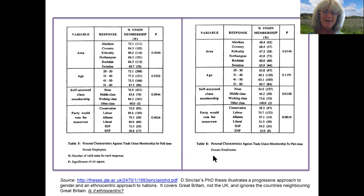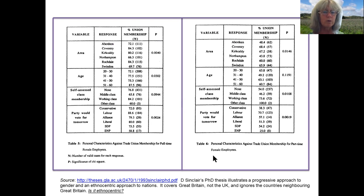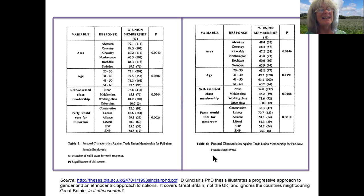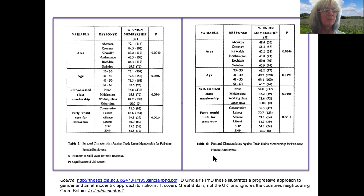So is it ethnocentric? Ethnocentric means centered upon a single ethnicity or single group. Here the group is Great Britain, and the PhD covered Great Britain, not the whole of the UK — that has to do with the inclusion or exclusion of Northern Ireland. This question of whether something is ethnocentric keeps rising its head and will keep coming up. We're going to return to that question shortly.